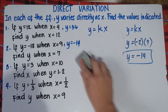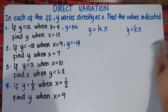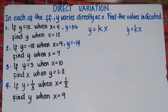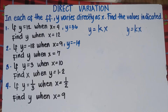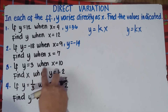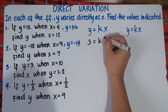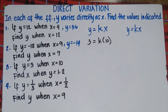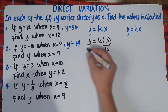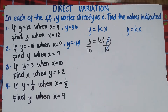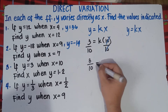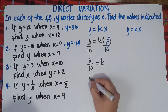Let's try number 3. If y equals 3 when x equals 10, find x when y equals 1.2. We already have a decimal. First thing to do: substitute the first statement. y equals 3, so 3 equals k times 10. To get the value of k, divide both sides by 10. So k equals 3 over 10. We cannot reduce this fraction since 3 and 10 share no common factor.